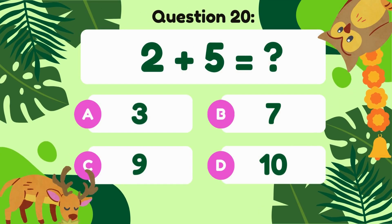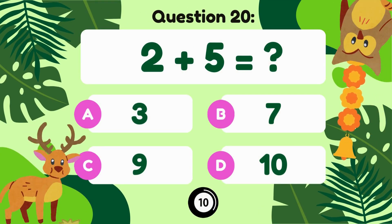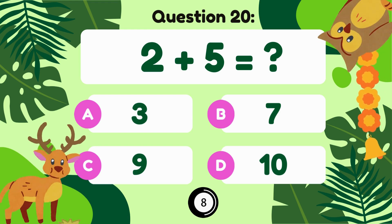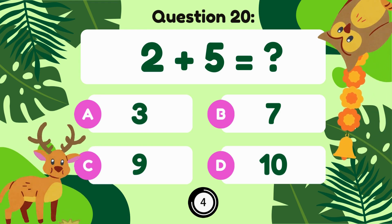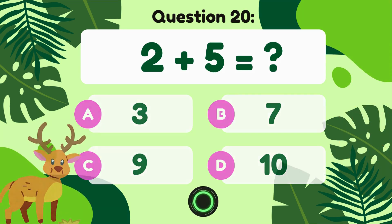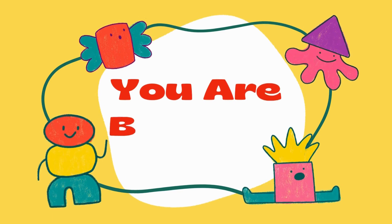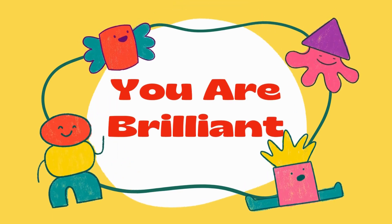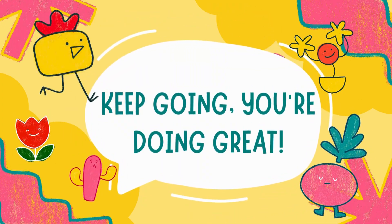2 plus 5 equals... 2 plus 5 is equal to 7. You are brilliant! Keep going. You are doing great!